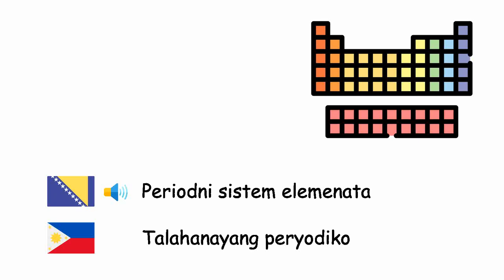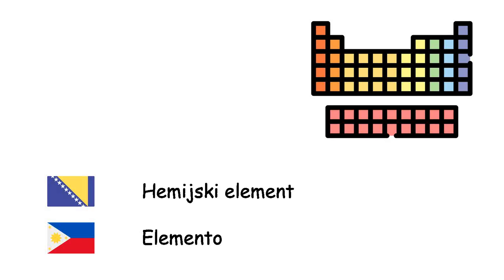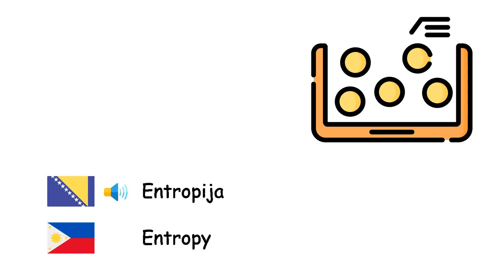Periodni sistem elemenata — Talahan na iyang peryodiko. Hemijski element — Elemento. Entropija — Entropy.